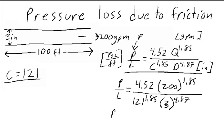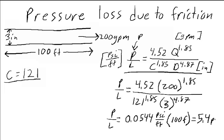So that's going to give us a P over L equal to 0.0544 psi per foot, and then we can multiply that by 100 feet to get our value of 5.4 psi.